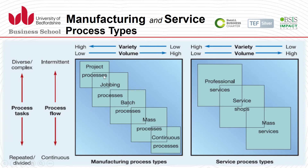In this graphical illustration, the top left shows project processes, moving down to jobbing processes, batch, mass processing, and continuous processing. Project processes have very high variety but very low volume. In contrast, continuous processes at the bottom right are very high in volume but very low in variety. For service organizations, there are three main types: professional services, service shops, and mass services, with the same volume-variety logic applying.